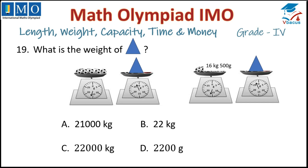Question 19: What is the weight of the triangle? In the first weighing balance, 4 balls equal 1 triangle. In the second weighing machine, 1 ball plus 16 kg 500 grams — so 3 balls are equal to 16 kg 500 grams. We can find the value of 1 ball by dividing 16.500 by 3.